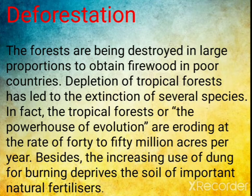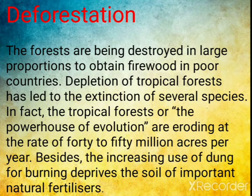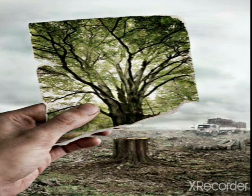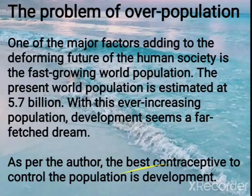The chapter also talks about deforestation, which has been a burning issue for years. Forests are being destroyed in large proportions to obtain firewood, especially in poor countries. Depletion of tropical forests has led to the extinction of several species. The tropical forests, the powerhouse of evolution, are eroding at the rate of 40 to 50 million acres per year. Additionally, the increasing use of dung for burning deprives the soil of important natural fertilizers.